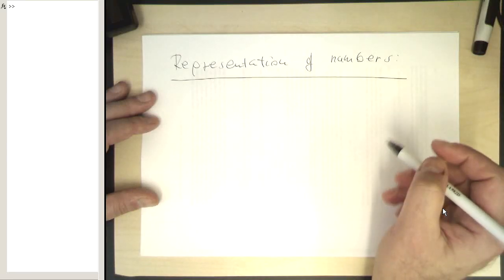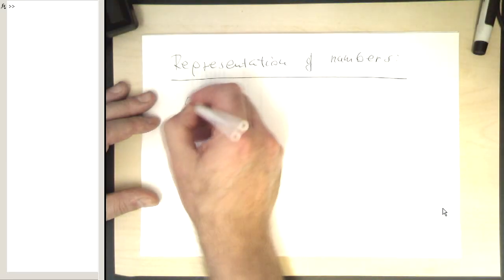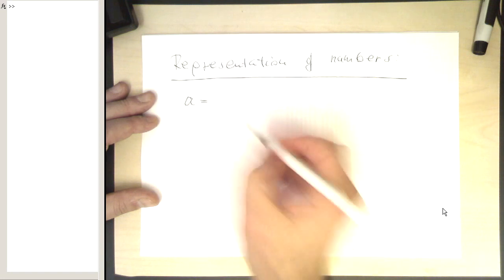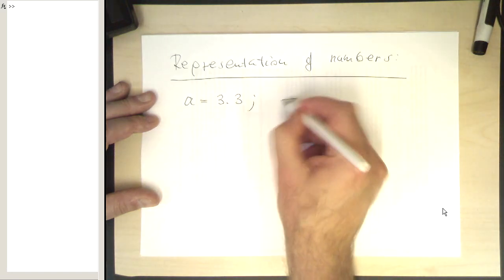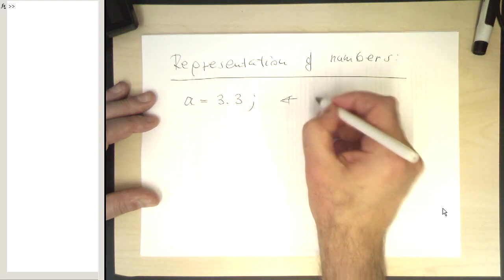Let's now deal with the representation of numbers. If we write something like a equals 3.3, then this is stored as a double floating point.